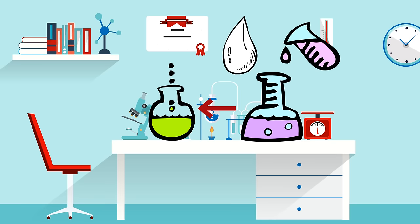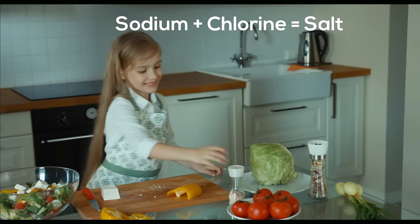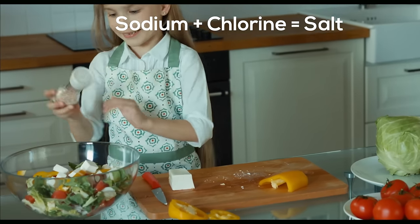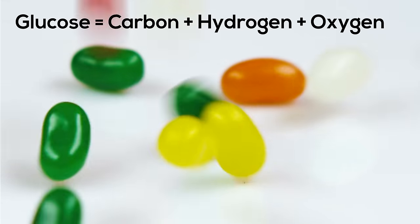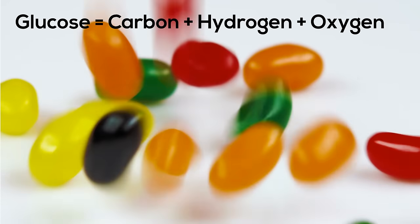Here are some items that combine to make compounds. Table salt is sodium and chlorine. Glucose, a type of sugar, is made of carbon, hydrogen, and oxygen.